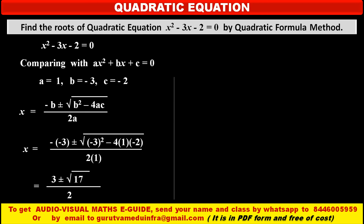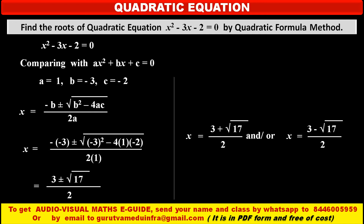Because of this plus or minus root 17, we get two values of variable x. The first value is x is equal to 3 plus root 17 upon 2, and the second value is x is equal to 3 minus root 17 upon 2. In this way we get two roots of this quadratic equation: one is 3 plus root 17 upon 2, and the other is 3 minus root 17 upon 2.